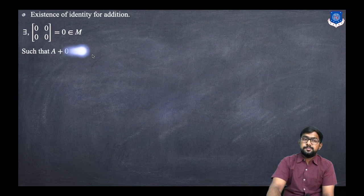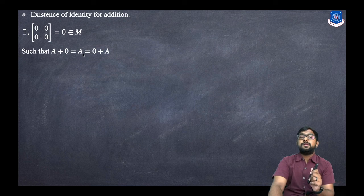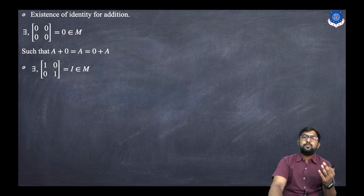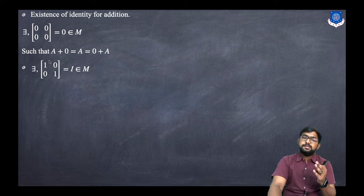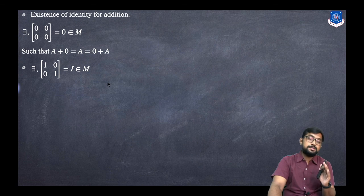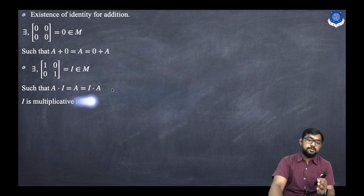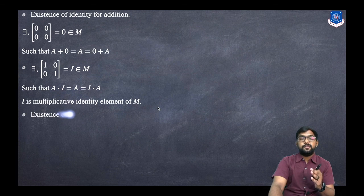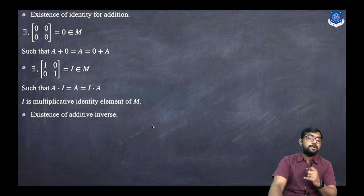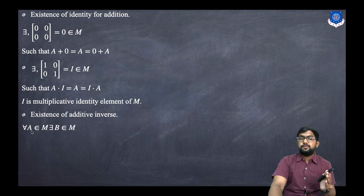For existence of identity for addition, there exists the zero matrix in M such that A + 0 = A = 0 + A, so the zero matrix is the additive identity. There also exists the identity matrix I = [[1,0],[0,1]] in M such that A·I = A = I·A, so I is the multiplicative identity.